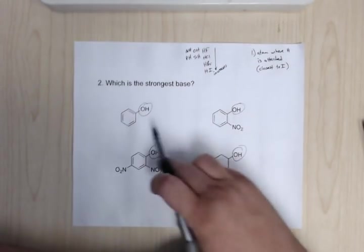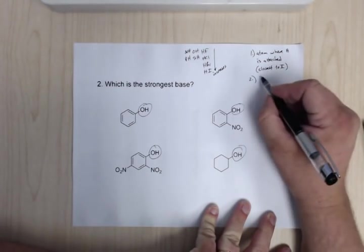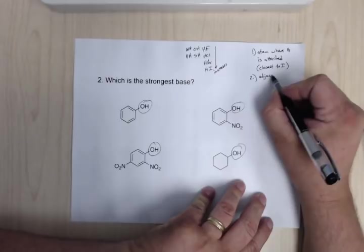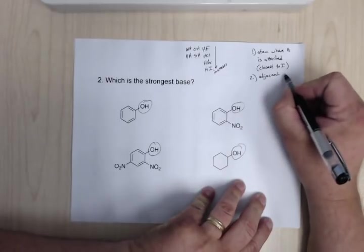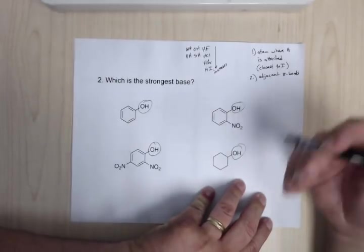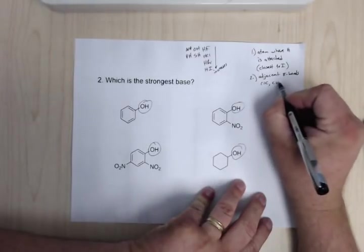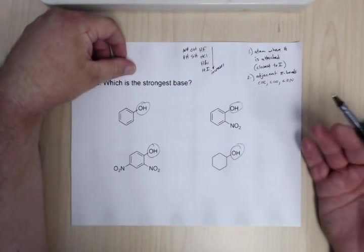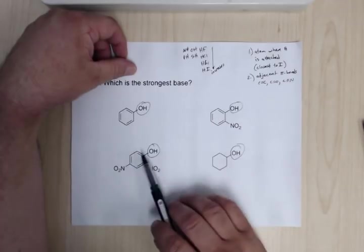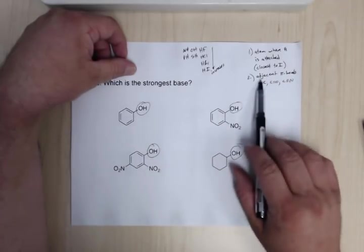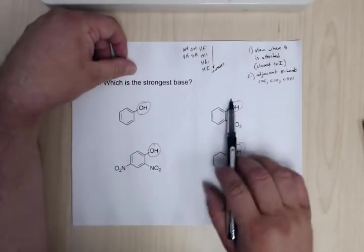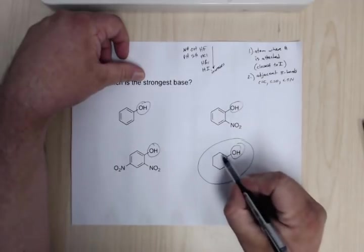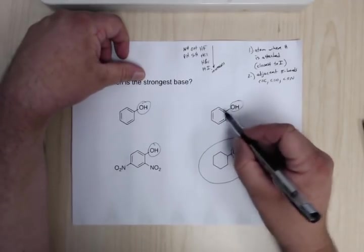Now after that, if that's still a tie, then what you want to do is you need to look to see adjacent pi bonds. Doesn't matter, it's things like carbon-carbon bonds, carbon-oxygen bonds, C-triple bonds, things like that. If you have those adjacent to it, it's going to be more acidic. So in this case, all of these have double bonds, so that's going to make these much more acidic than this one that doesn't. And so you can go and say that's it, because it does not have the double bond adjacent to it. So that's it.